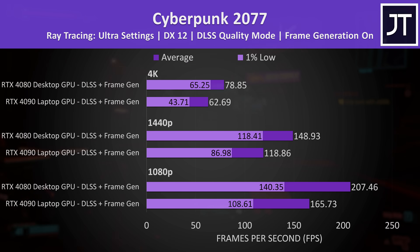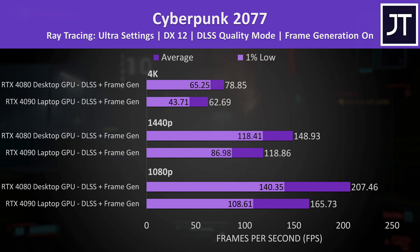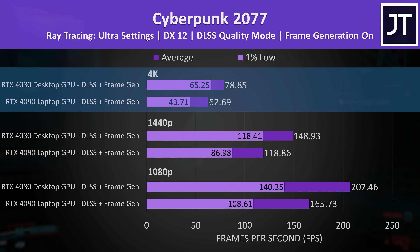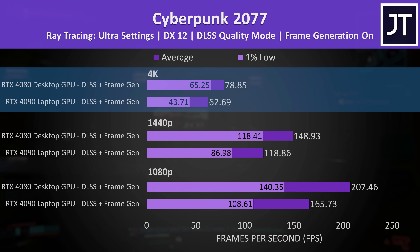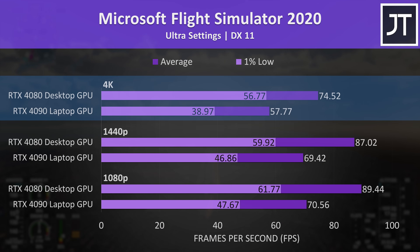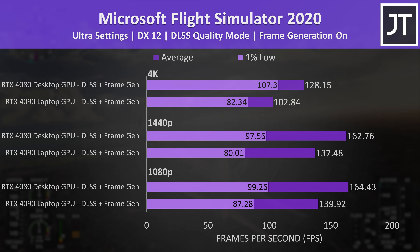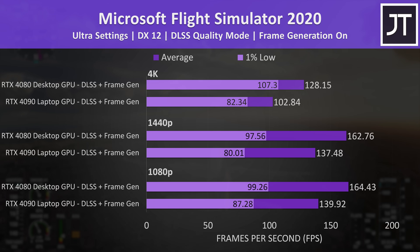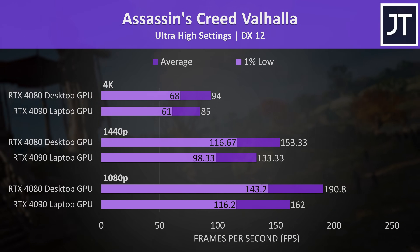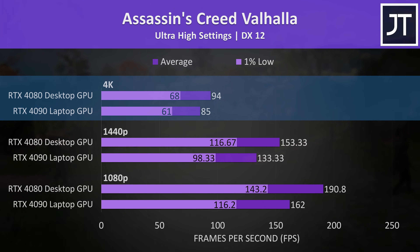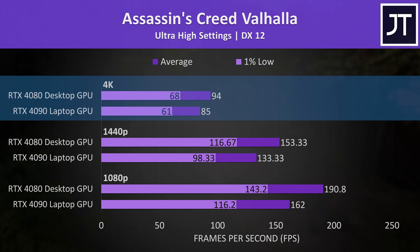I've also tested the higher ray tracing ultra preset with DLSS set to quality mode and frame generation enabled. The desktop had a larger 25% lead at 4K, but the laptop was still playable above 60 FPS counting generated frames. Microsoft Flight Simulator was close to 60 FPS on the laptop at 4K ultra settings, but the desktop was 29% faster. Assassin's Creed Valhalla had the smallest difference out of all 23 games at 4K, where the desktop 4080 was only around 11% or 9 FPS faster than the laptop 4090.